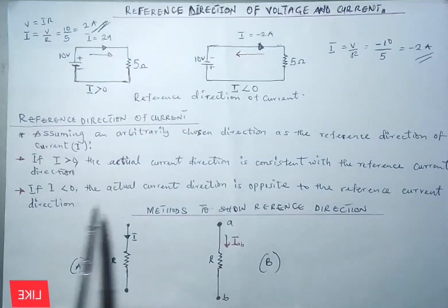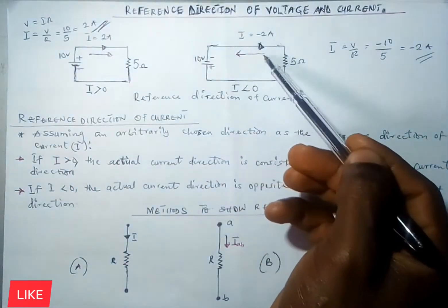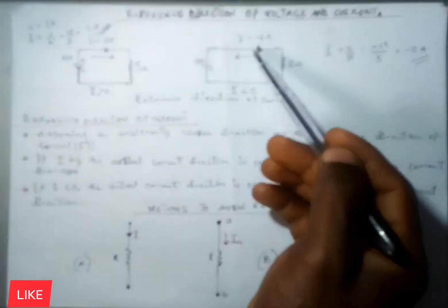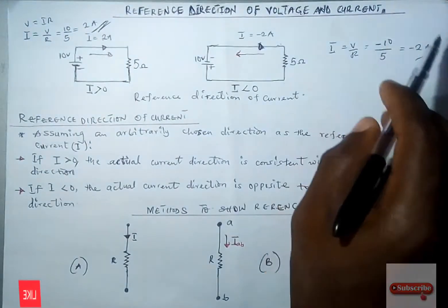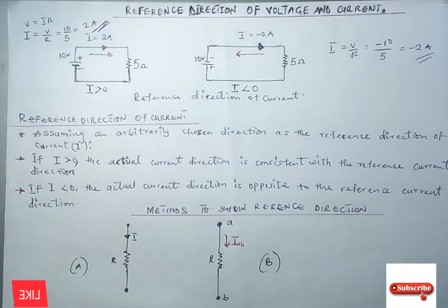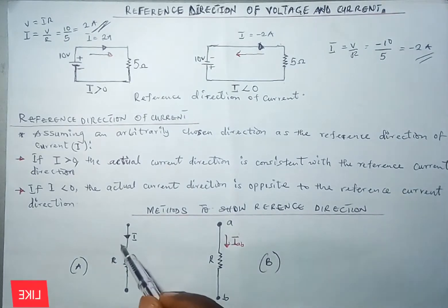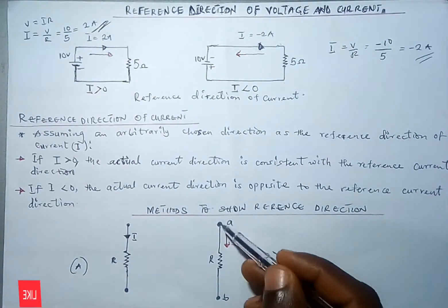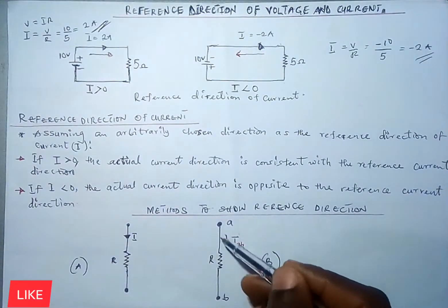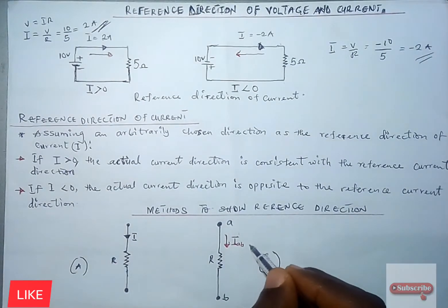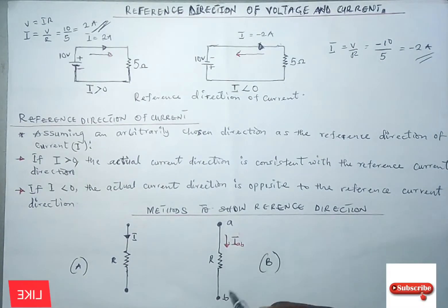The actual current direction is opposite to the reference current direction when the result is negative. Remember, the assumed direction is just assumed — it is advisable to apply it in a circuit as given. The final calculated result is what determines the real direction of the current. In a circuit diagram, the reference direction can be shown with an arrow on the conductor line, or alternatively with subscripts such as 'a' and 'b' to denote the junction.